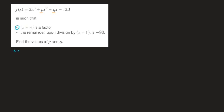Since x plus 3 is a factor, the Factor Theorem allows us to state — implies — that f of negative 3 equals 0. Now since we know that f of negative 3 has to equal 0, if we replace every x inside f of x by negative 3, we'll obtain our first equation involving the two unknowns p and q.